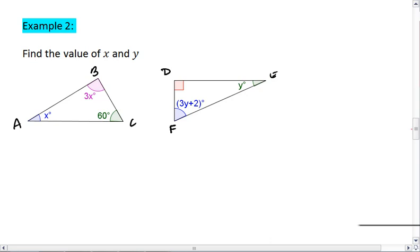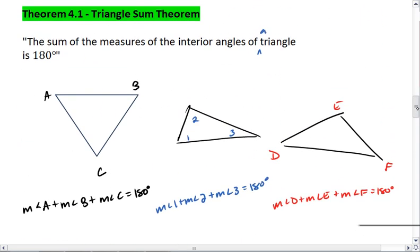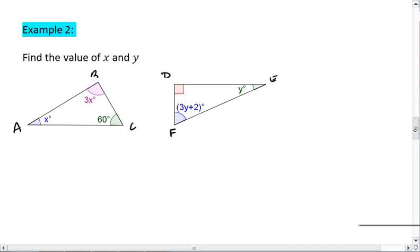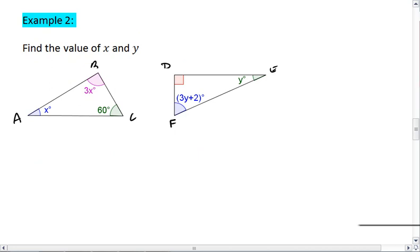For both of these, we'll use the theorem that we just learned, and that's the triangle sum theorem. And that tells us that for triangle ABC, X plus 3X plus 60 must equal 180. Simplifying, we get 4X plus 60 equals 180.